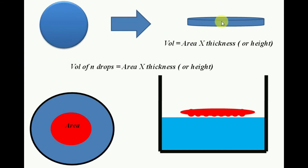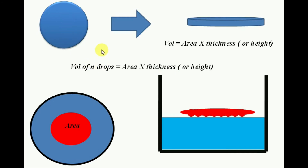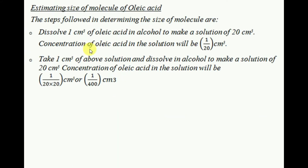Suppose we use n drops of the solution. Those n drops form a cylindrical film, and we already know the area. We need to calculate the thickness. The volume of the film is equal to the volume of n drops of the solution, so: area × thickness = volume of n drops. Since we know the volume of drops taken and the area of the film, thickness = volume of n drops ÷ area.